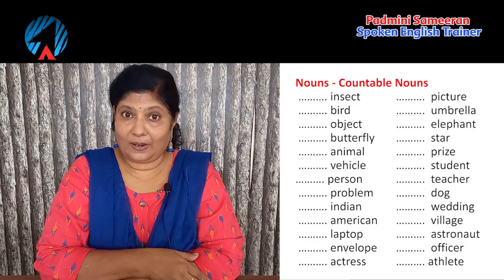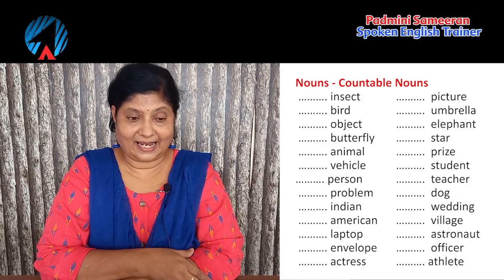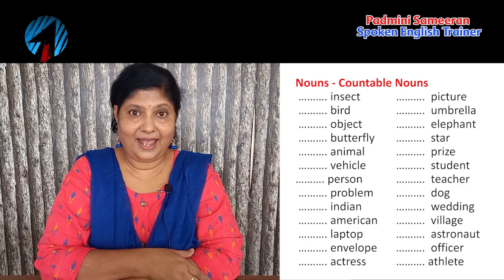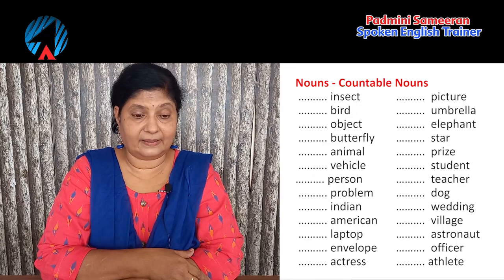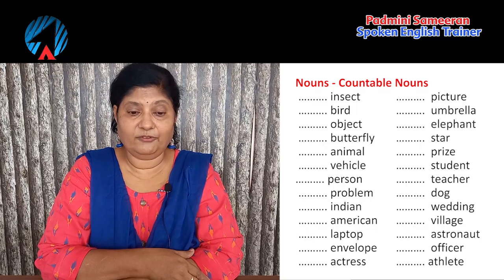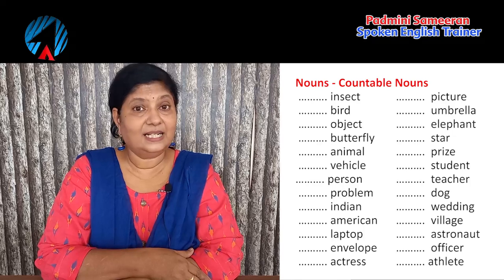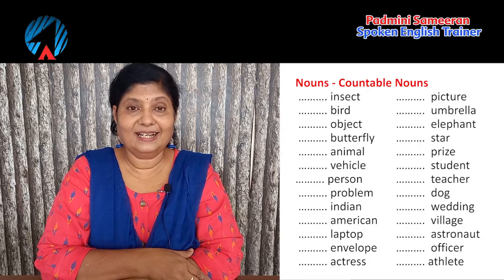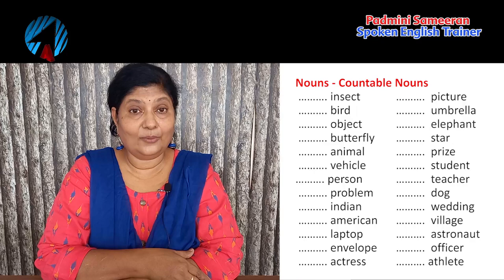Let's do the exercise together — 'a' or 'an': an insect, a bird, an object, a butterfly, an animal, a vehicle, a person, a problem, an Indian, an American, a laptop, an envelope, an actress, a picture, an umbrella, an elephant, a star, a prize, a student, a teacher, a dog, a wedding, a village, an astronaut, an officer, an athlete. These are all simple words where the vowel or consonant sounds are very clear.